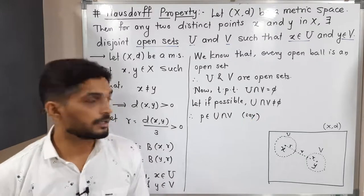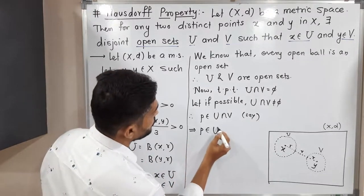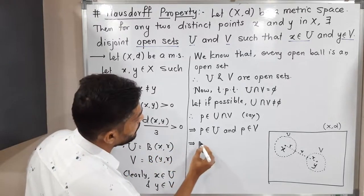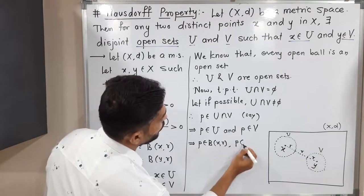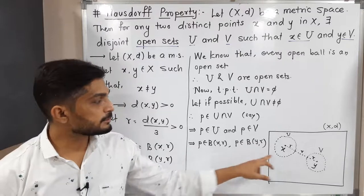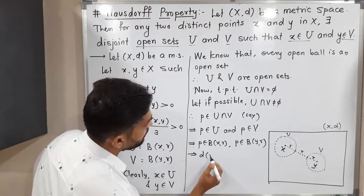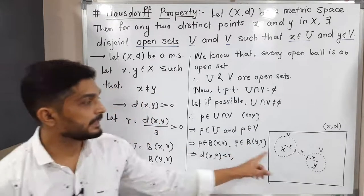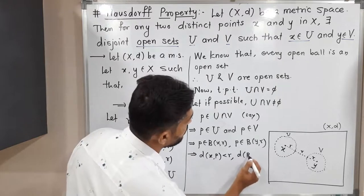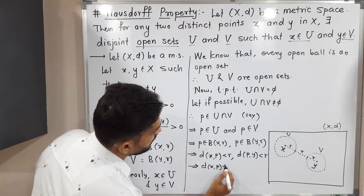Since p ∈ U ∩ V, p is in both U and V. Since U = B(x, r), we have p ∈ B(x, r), meaning d(x, p) < r. Since V = B(y, r), we have p ∈ B(y, r), meaning d(p, y) < r. So the distance from p to the center of each ball is less than the radius r.